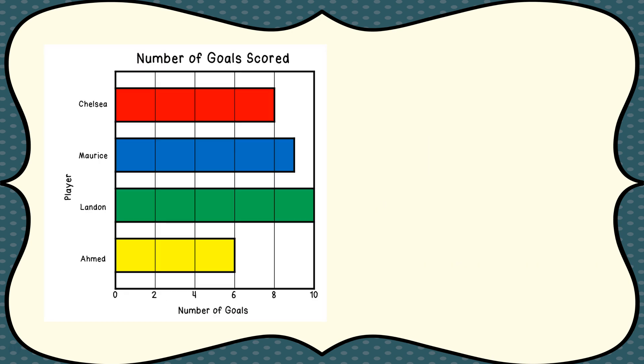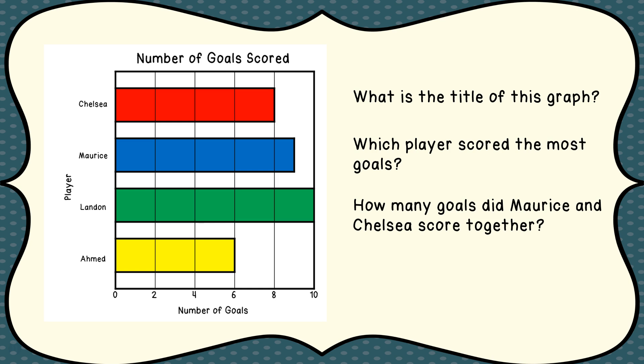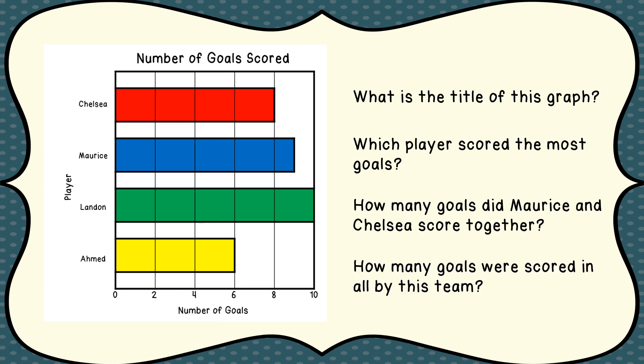Here's another graph. This one is a horizontal graph, and we have some questions for you. First question: what is the title of this graph? Second: which player scored the most goals — Chelsea, Maurice, Landon, or Ahmed? Third: how many goals did Maurice and Chelsea score together? And finally: how many goals were scored in all by this team?